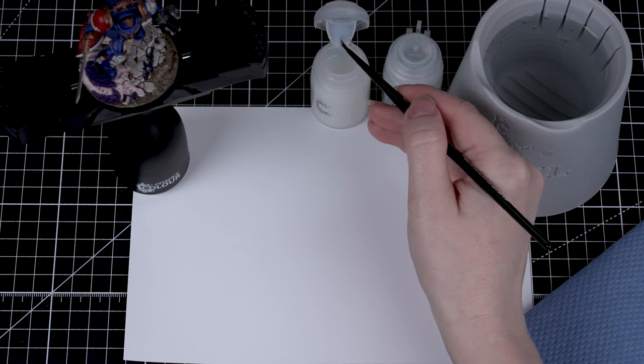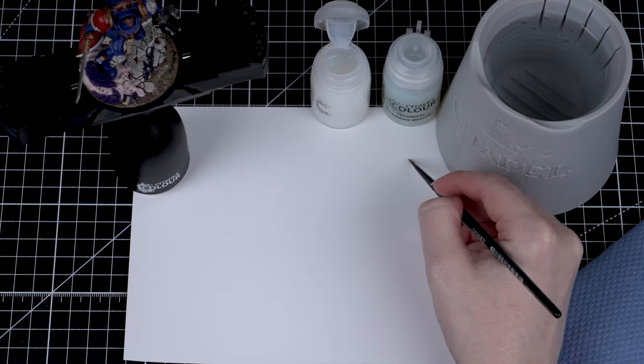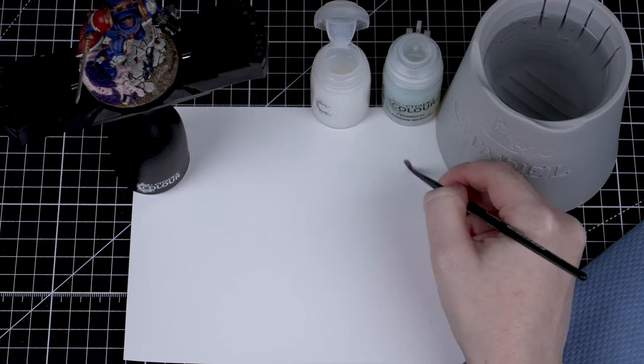Ardcoat can be a little bit thick, so it's a good idea to add a touch of water to it to thin it down. This will make sure it's not too streaky when we apply it to our miniature.